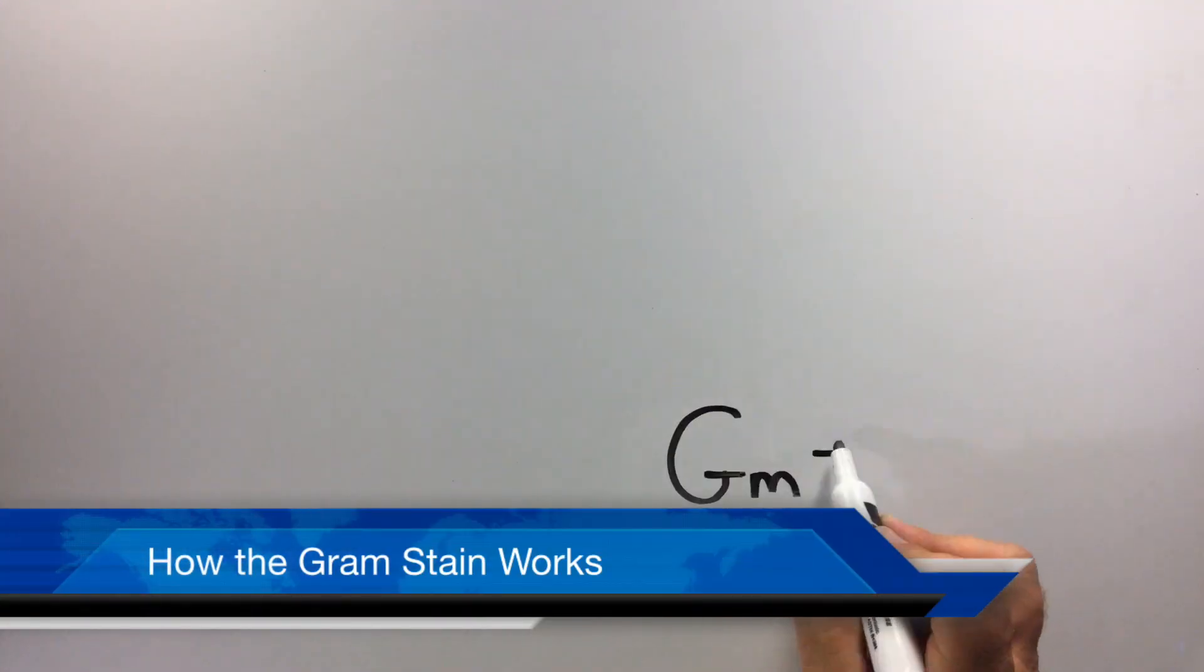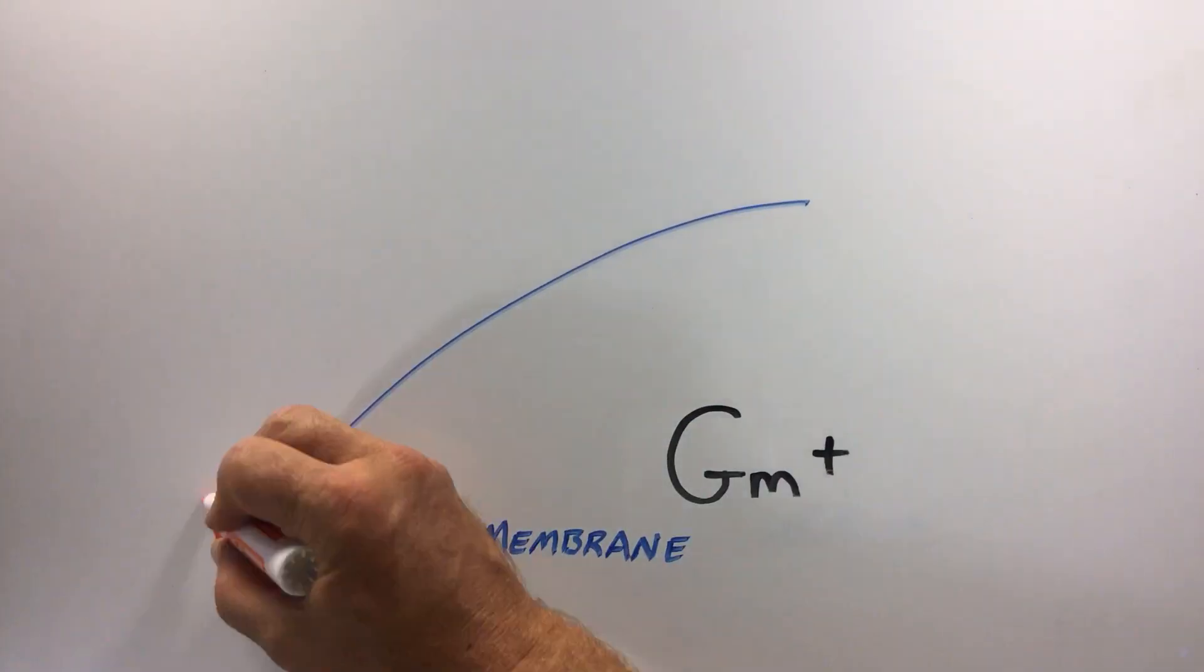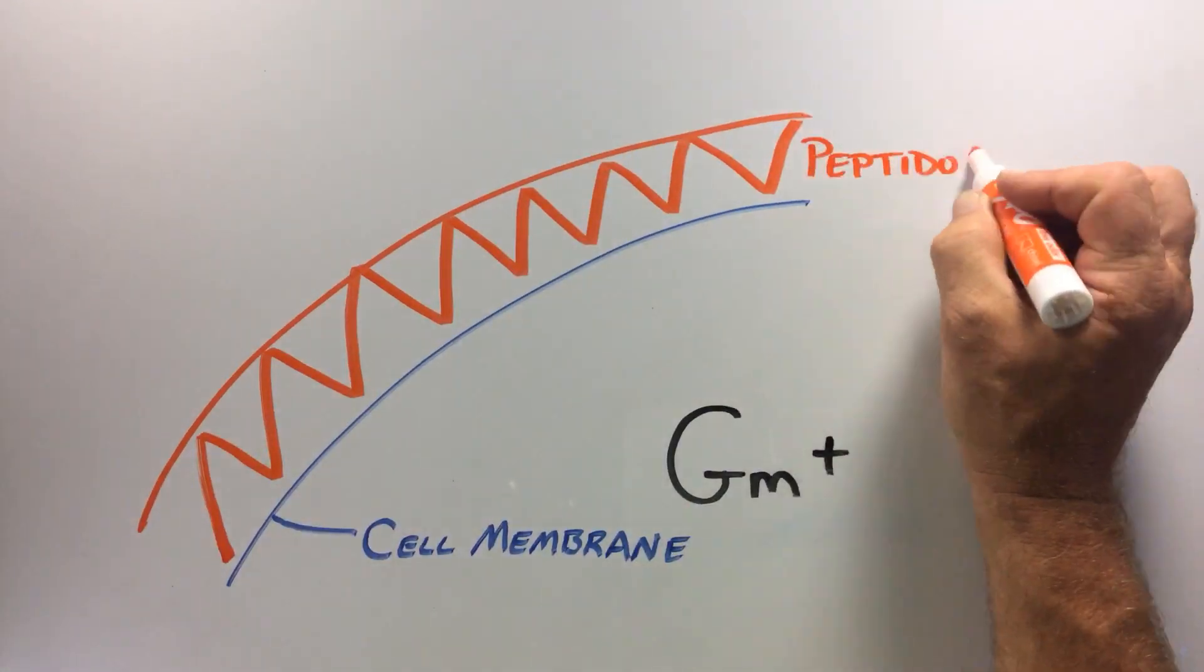Both Gram-positive and Gram-negative bacteria contain peptidoglycan in their cell walls, which is stained with crystal violet. In this Gram-positive cross-section, notice the thick layer peptidoglycan in orange on the outside of the cell membrane.